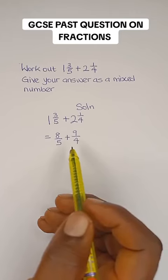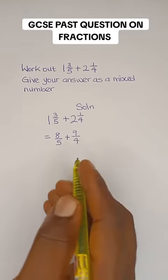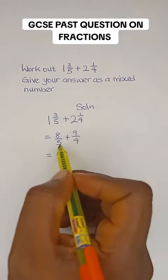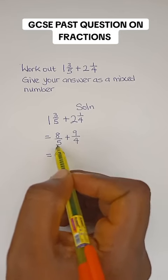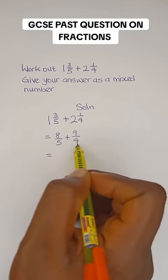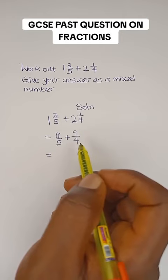The next thing we are going to do is add the two fractions together. We need to get a common denominator for these two fractions. The denominator here is 5, and the denominator here is 4. So what would be the common denominator?